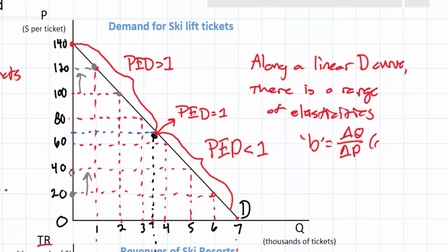Now this will be constant along a straight line demand curve. It will be a constant slope. But when we look at PED, we're looking at percentage changes in quantity over percentage changes in price. And this will not be constant. This will be variable.